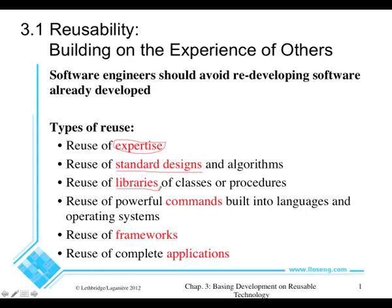But now we take the actual code that people have written. It's compiled in large libraries — for example, the Java libraries that many of you have already used. Another thing we can reuse is features of the operating system, commands built into the operating system. Unix is famous for its commands: grep, sed, awk, and many others that you can put together to create powerful tools.